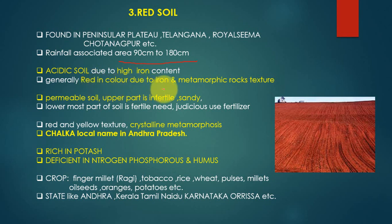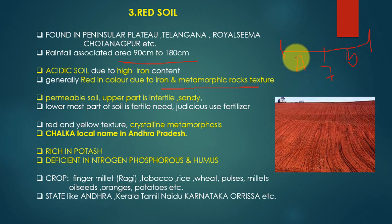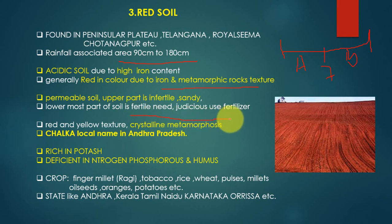Red soil is acidic soil with a pH below 7. It is permeable soil — the upper part is infertile and sandy. Being permeable, water quickly percolates through it, carrying minerals deeper, so the lower part of the soil is more fertile. The upper part is sandy and infertile because whatever minerals and nutrients are present percolate to deeper horizons. Red soil has a crystalline metamorphic texture and is rich in potassium but deficient in other minerals due to leaching.